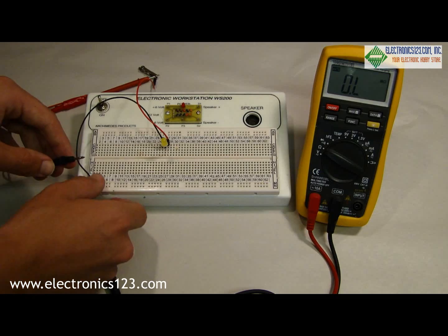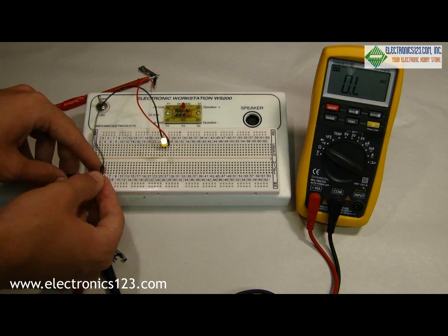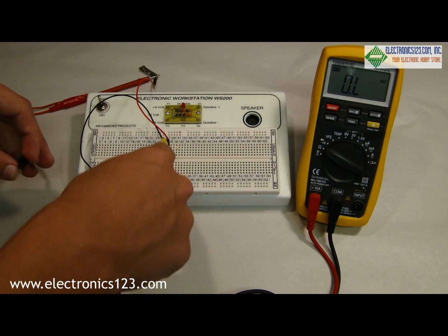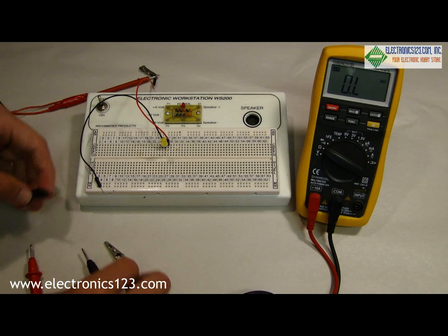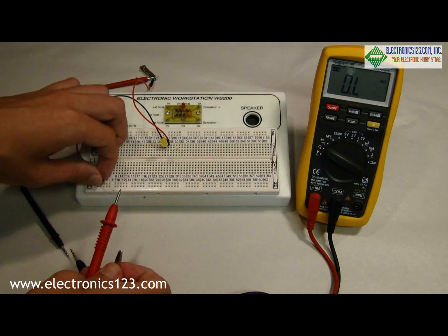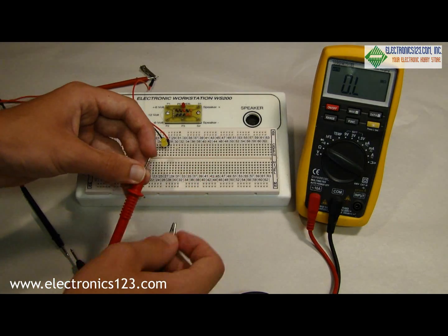To check the amount of current that this LED requires to light, I can run the power through the multimeter before it reaches the LED. In order to do this I'll connect the positive probe on the multimeter to the negative lead on the LED.